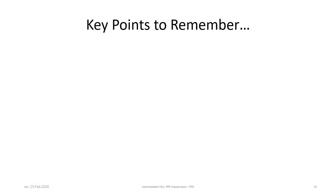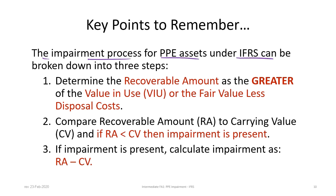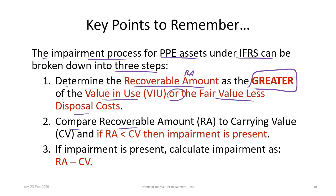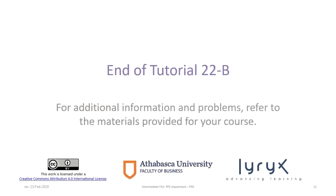Let's conclude with some points to remember. The impairment process for PPE assets under IFRS can be broken down into three steps. First, determine the recoverable amount as the greater of the value in use or the fair value less disposal costs. Second, compare the recoverable amount to the carrying value — if the recoverable amount is less, then impairment is present; if more, no impairment. Third, if impairment is present, calculate the impairment amount as the recoverable amount minus the carrying value. This concludes Tutorial 22B on impairment for property, plant, and equipment assets under IFRS. If you need to review PPE impairment under ASPE, revisit Tutorial 22A.